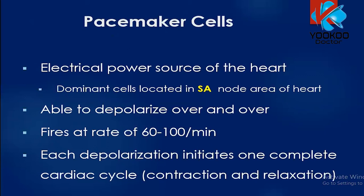The dominant pacemaker cells are located in the sinoatrial node area of the heart. These are able to depolarize repeatedly, firing at a rate of 60 to 100 per minute — that's where the heart rate comes from. Each depolarization initiates one complete cardiac cycle, meaning whenever there is one depolarization, there will be one contraction and relaxation of the heart.